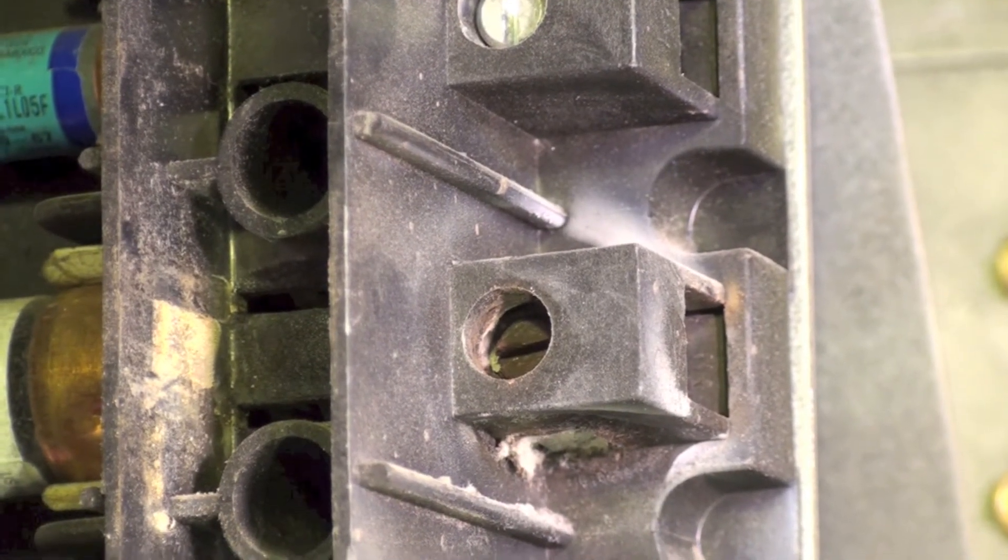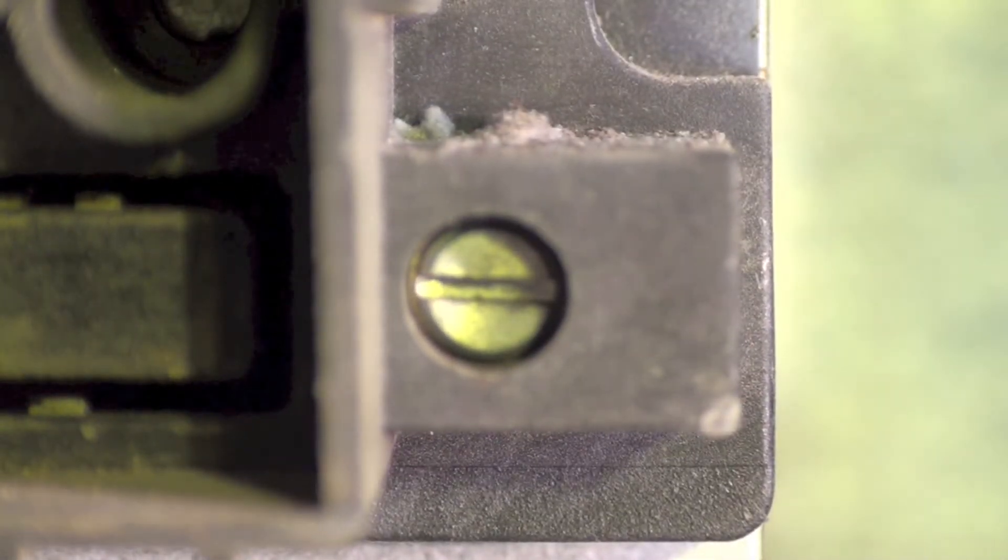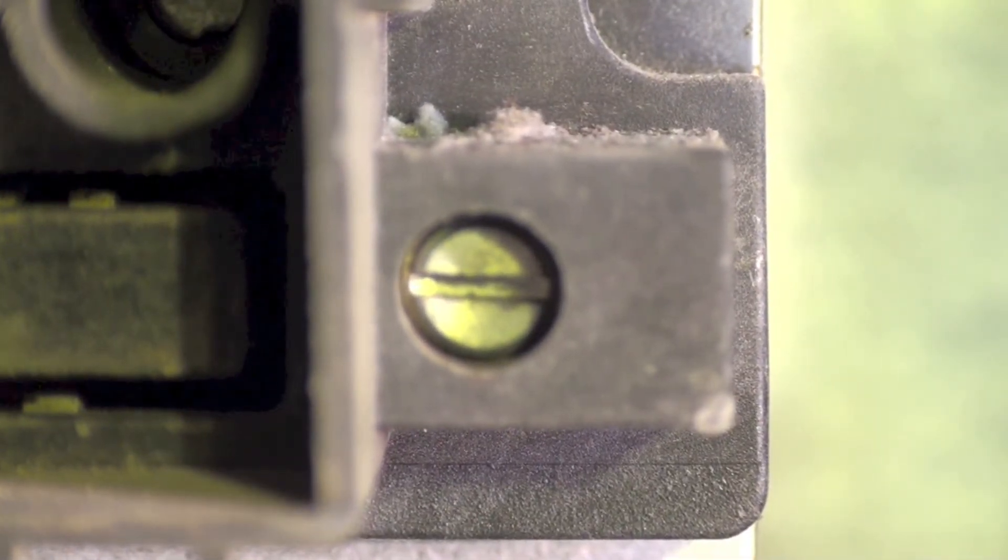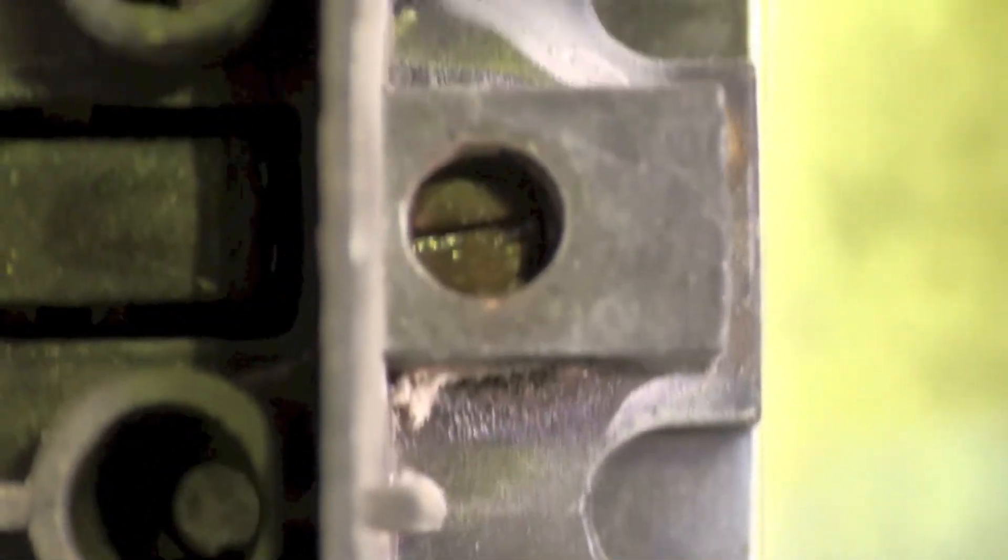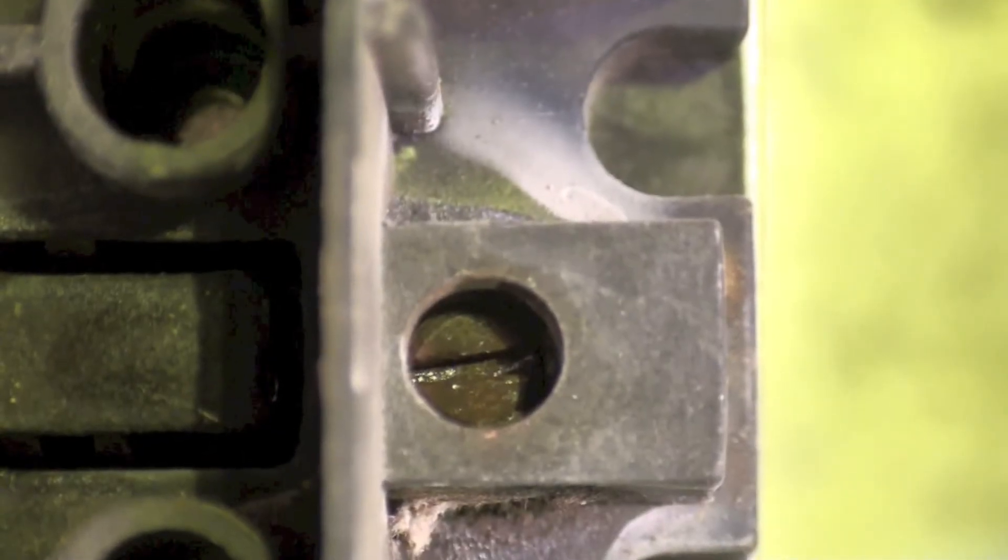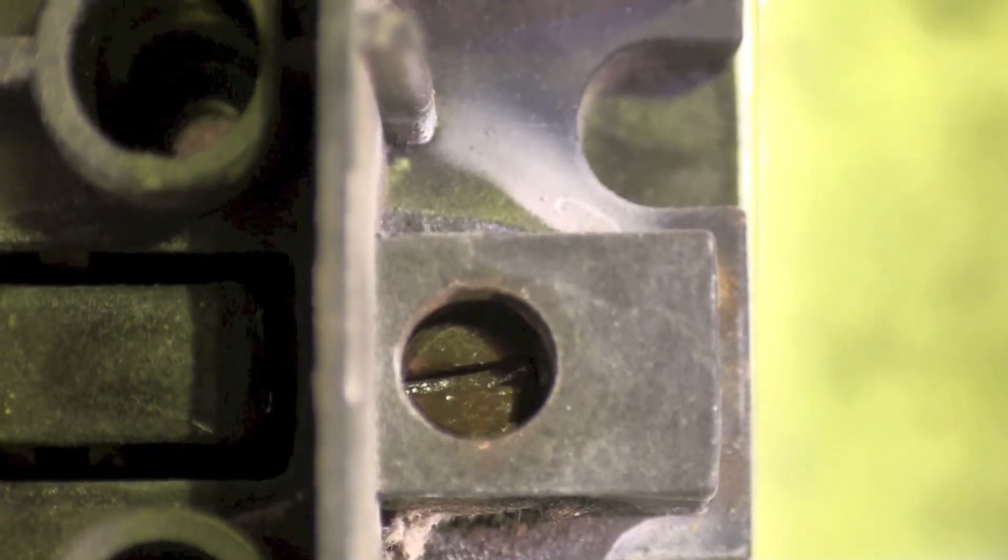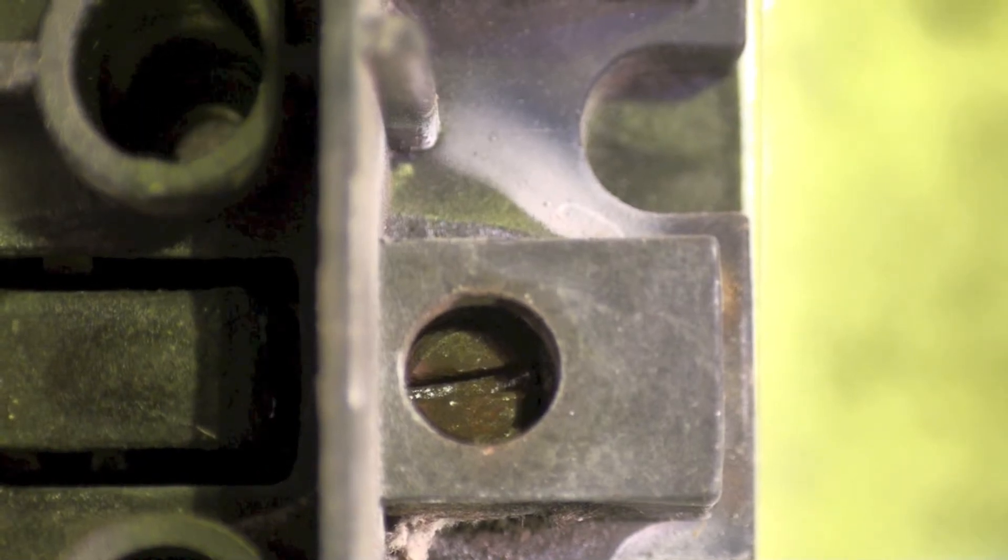There's the bottom screw and you can see it looks pretty good. Now look at that screw in the second one up - it's discolored. When I try to turn it, it's turning but you can hear it crunching with stuff falling out of there.